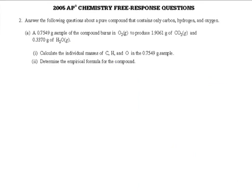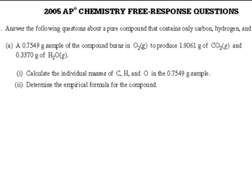Here is the 2005 AP exam question. We have a .7549 gram sample of a compound containing carbon, hydrogen, and oxygen. It burns in oxygen gas to produce a certain mass of carbon dioxide and a certain mass of water. The first thing they ask is the individual masses of carbon, hydrogen, and oxygen, which we then want to turn into moles to find our ratio — we want to find our formula.